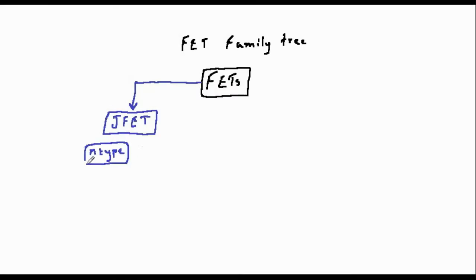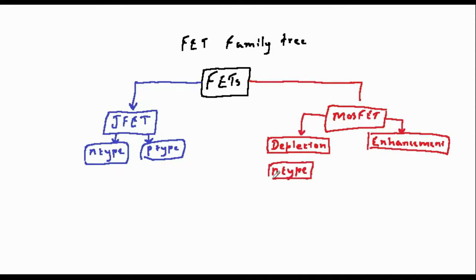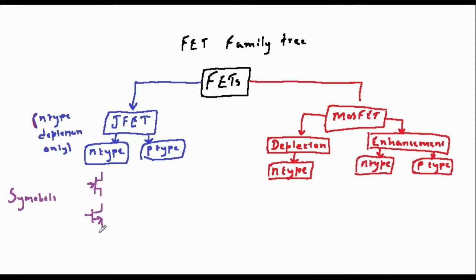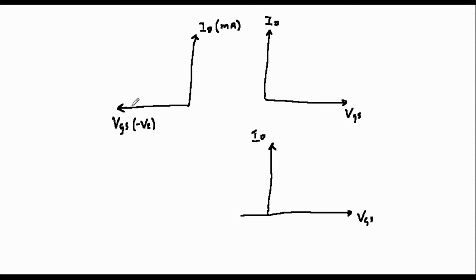Unlike the BJT, which basically only comes in two forms, NPN and PNP, there are many types of FET. A basic family tree is shown on the screen. All these devices operate in a similar way. However, they all work at different polarities and gate voltages. Some examples are shown on the screen.